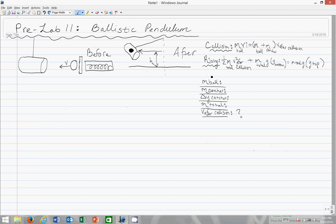So let's solve the first equation. You have m v_initial, and that's m_ball, equals m_ball plus m_catcher times v after collision.